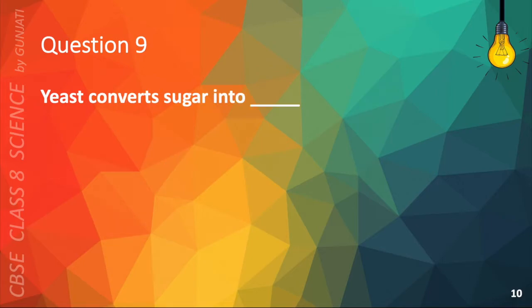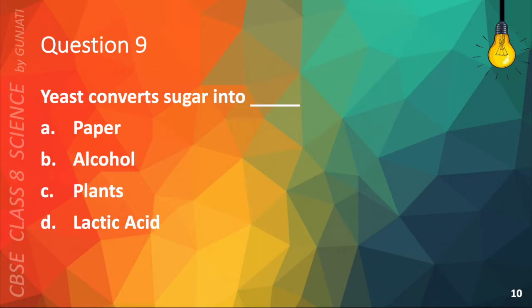Question 9. Yeast converts sugar into A. Paper, B. Alcohol, C. Plants, or D. Lactic acid. The correct answer is B. Alcohol.